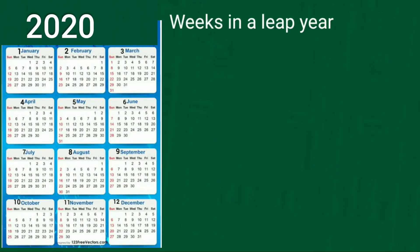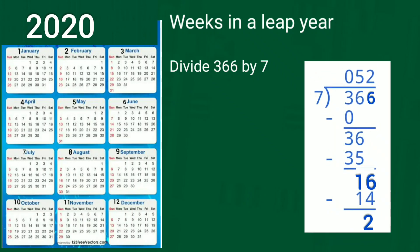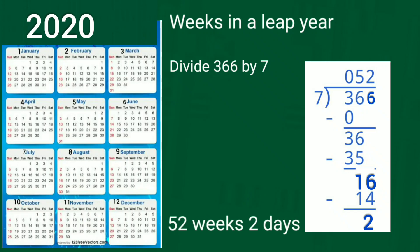Now, students, see how many weeks are in a leap year. There are 366 days in a leap year. To find out the weeks, we divide 366 by 7. On division, we get 52 as the answer and the remainder is 2. So, there are 52 weeks and 2 days in a leap year.